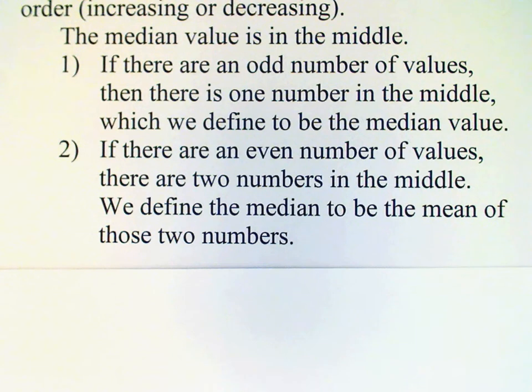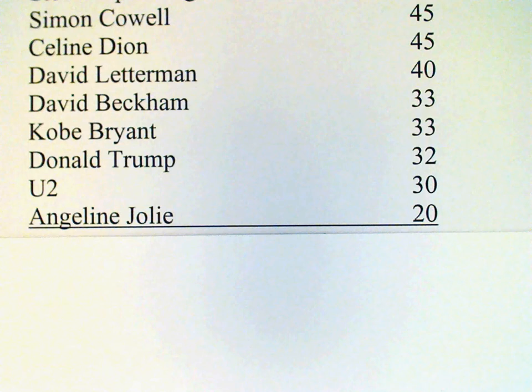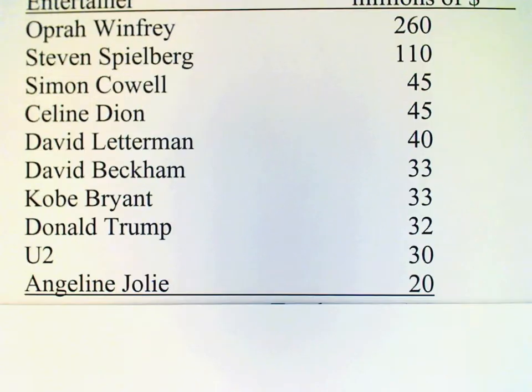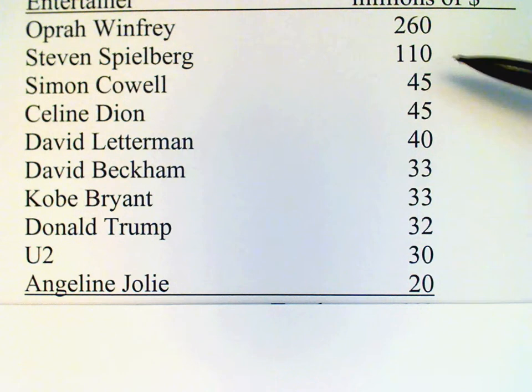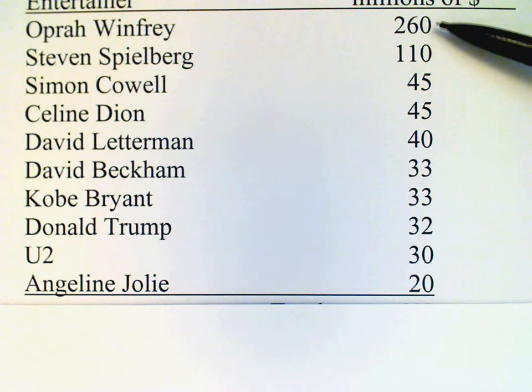Let's look back at our previous data set. If we are now interested in using the median value as a summary, then we need to find the value in the middle. This data set is already written in order, so we just need to count down from the top and up from the bottom.